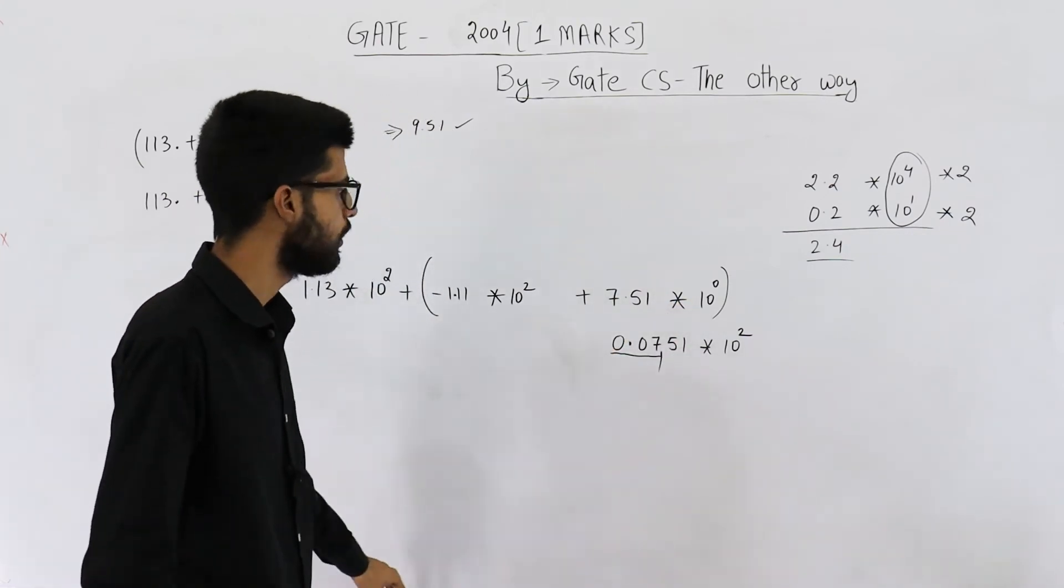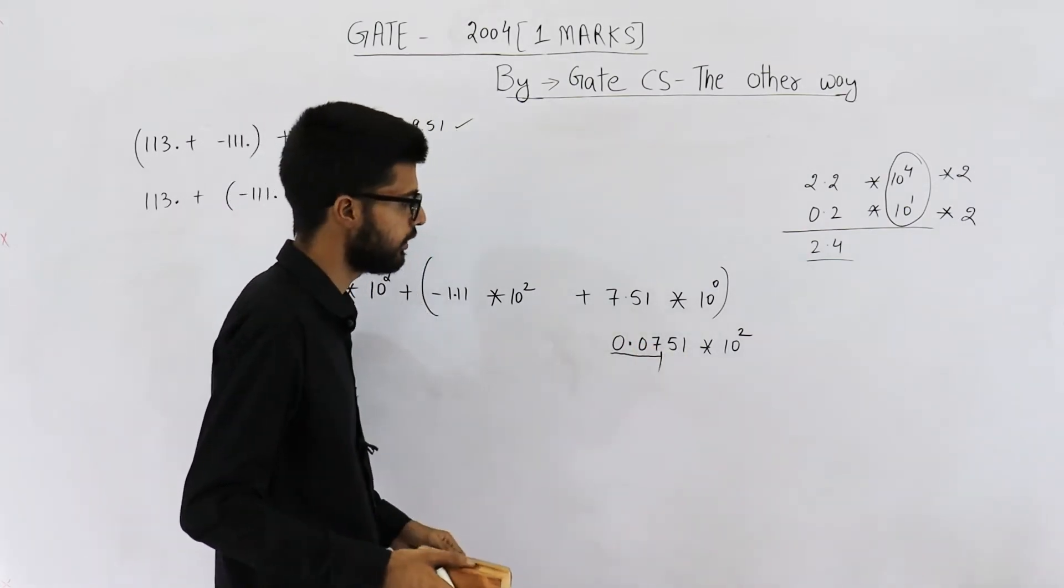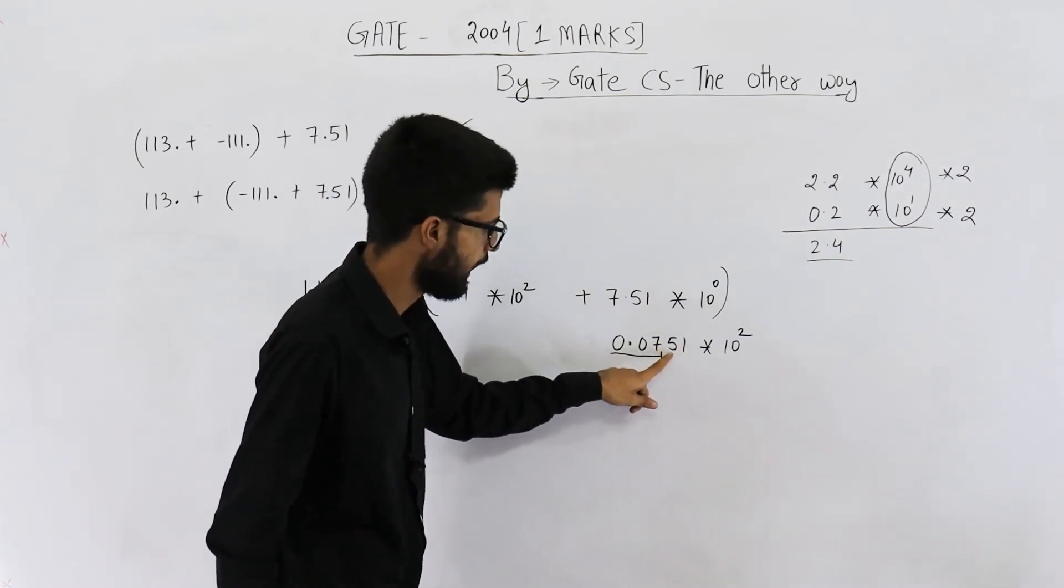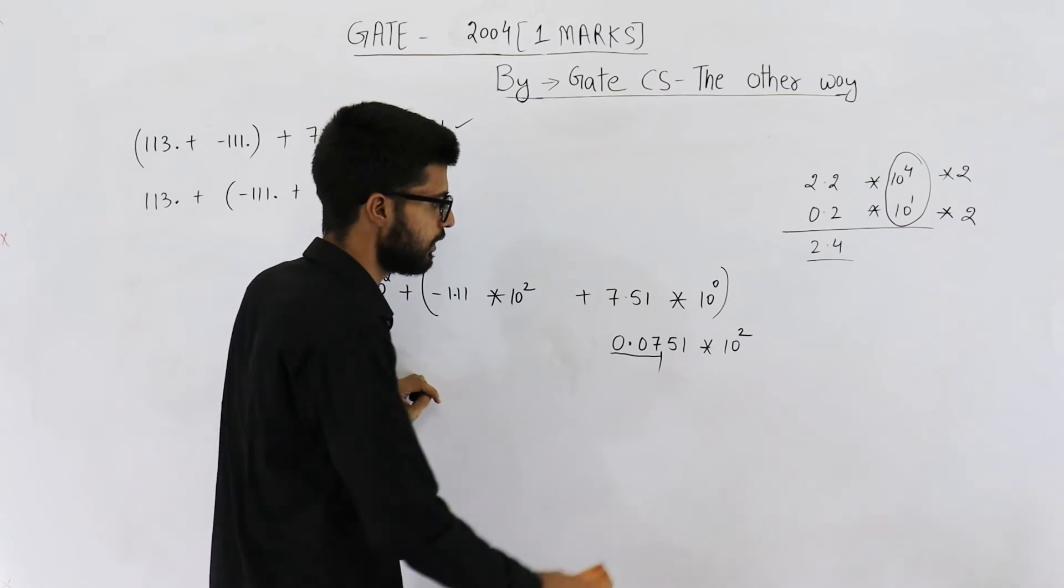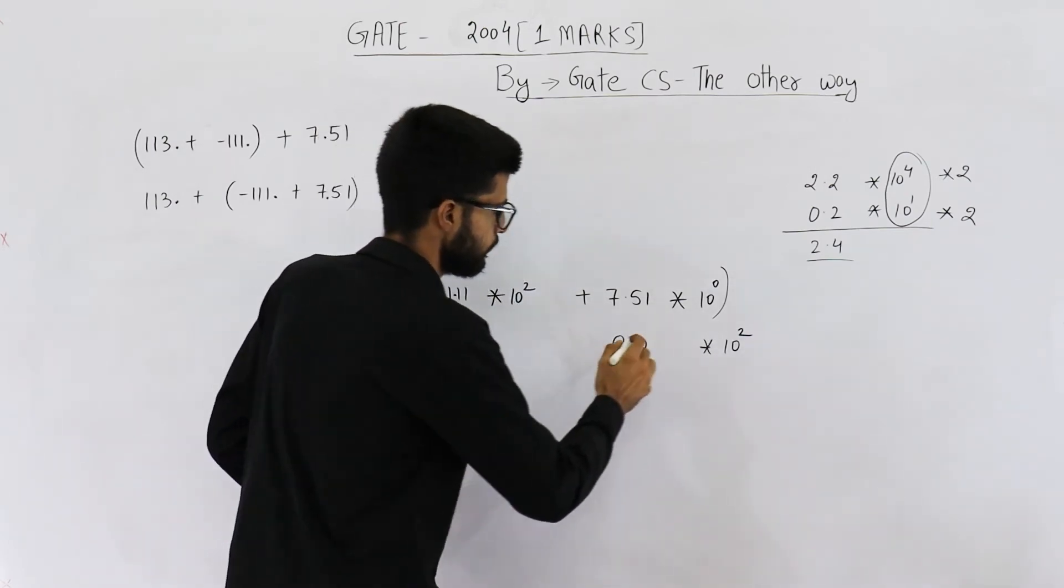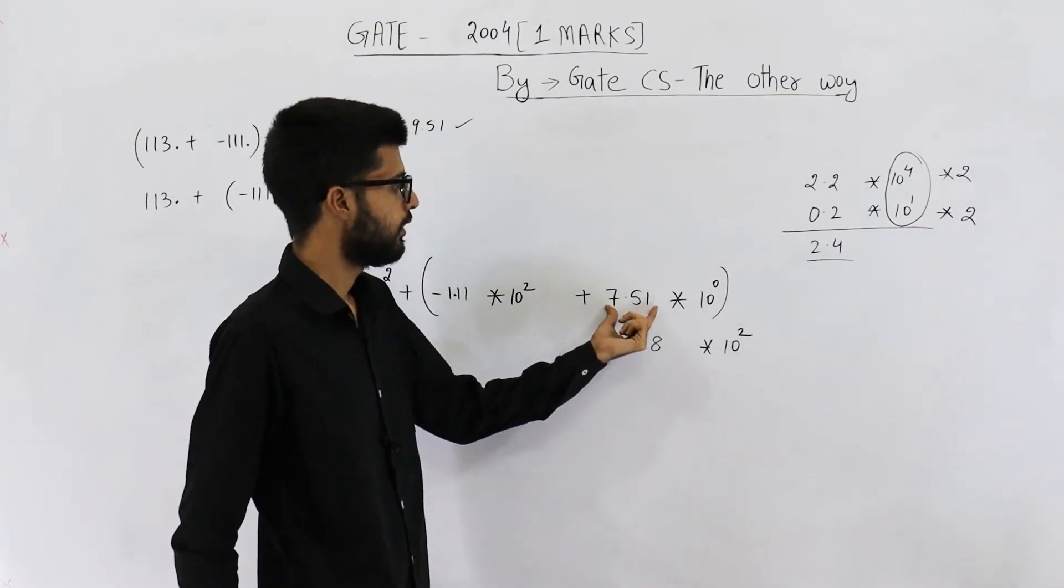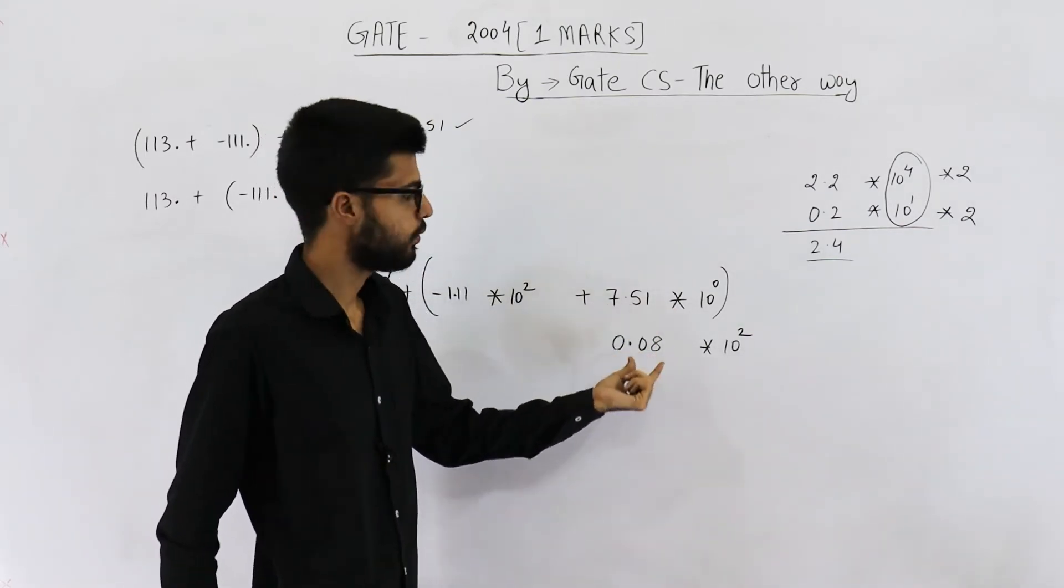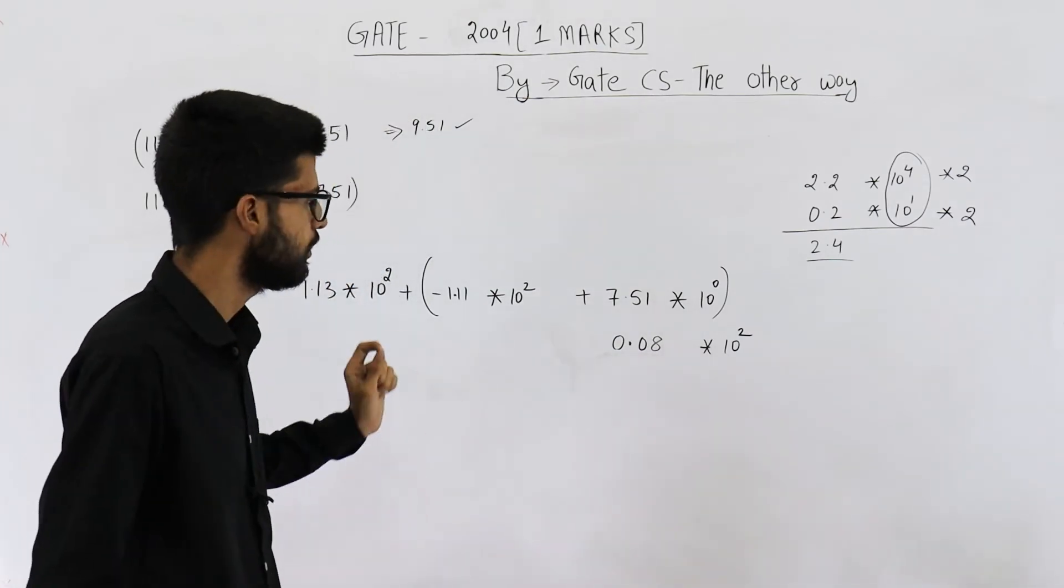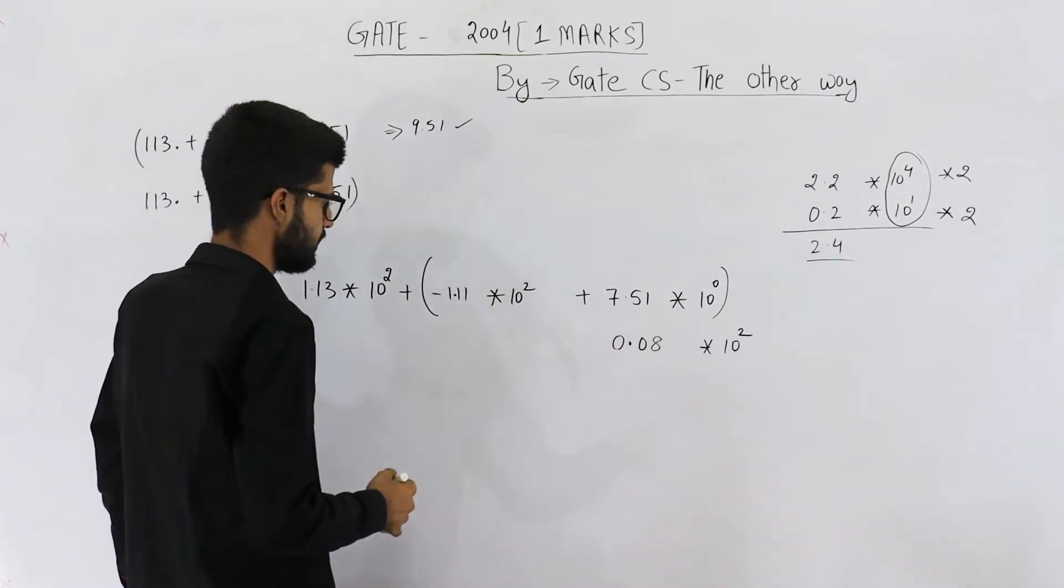That means round off this number. So, 751 can be rounded off to 8. Actually, this number, it can be neglected. Just increase the value of this digit 7. So, you will get 0.08 like this. That means 7.51 is rounded off to 8. We have lost some information, but it's okay. That's not a very big change.